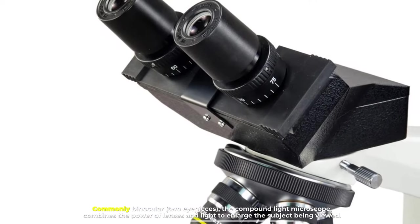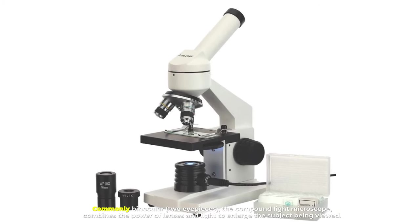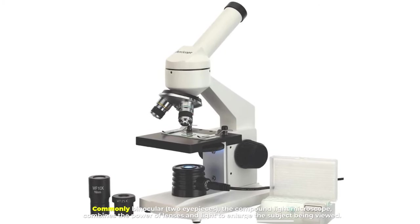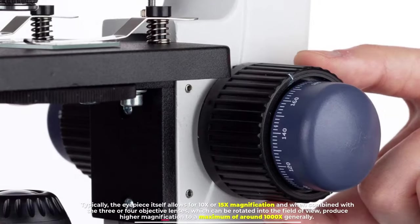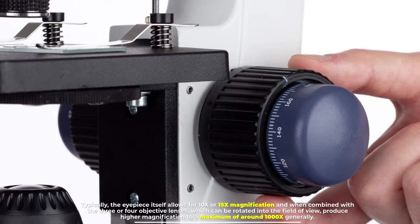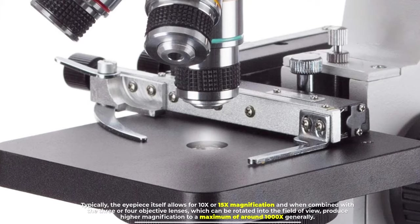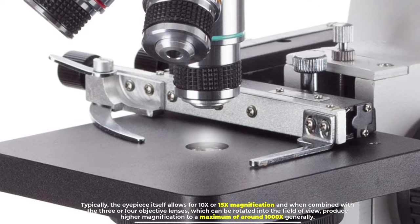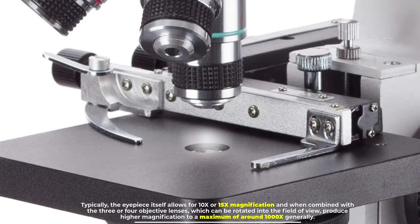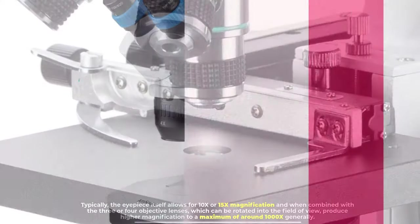Commonly binocular with two eyepieces, the compound light microscope combines the power of lenses and light to enlarge the subject being viewed. Typically, the eyepiece allows for 10x or 15x magnification, and when combined with three or four objective lenses that rotate into the field of view, produces magnification to a maximum of around 1000x.